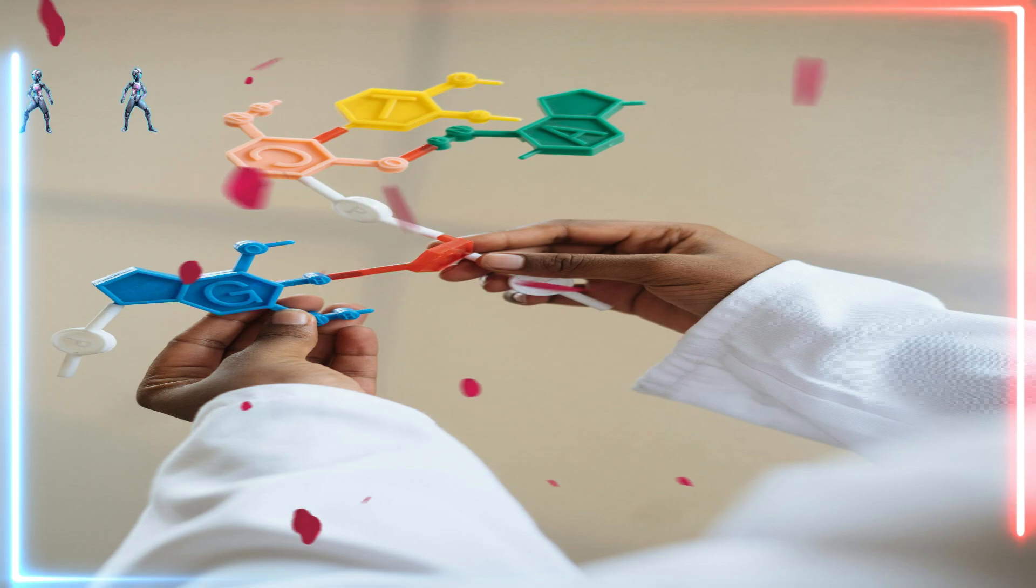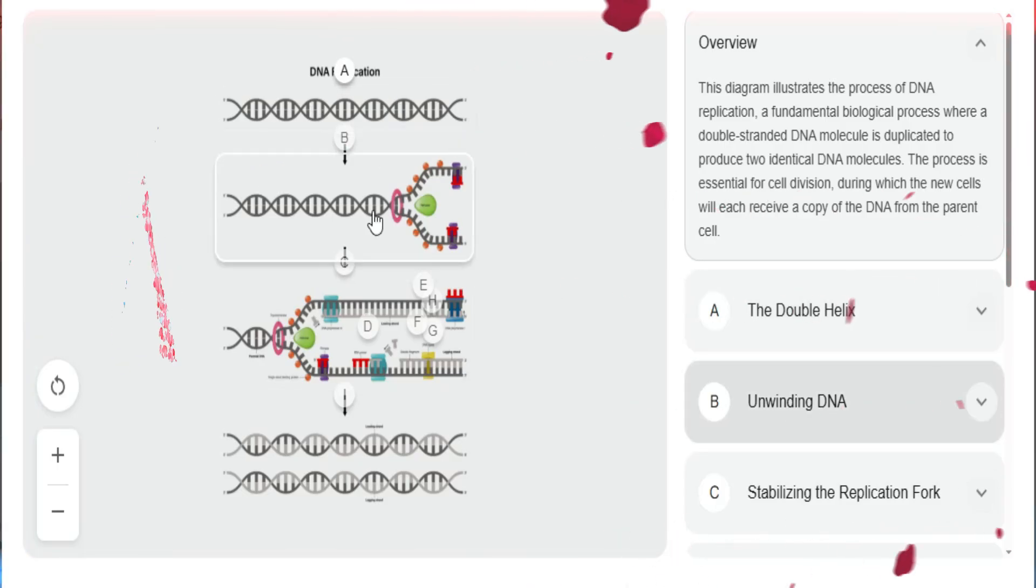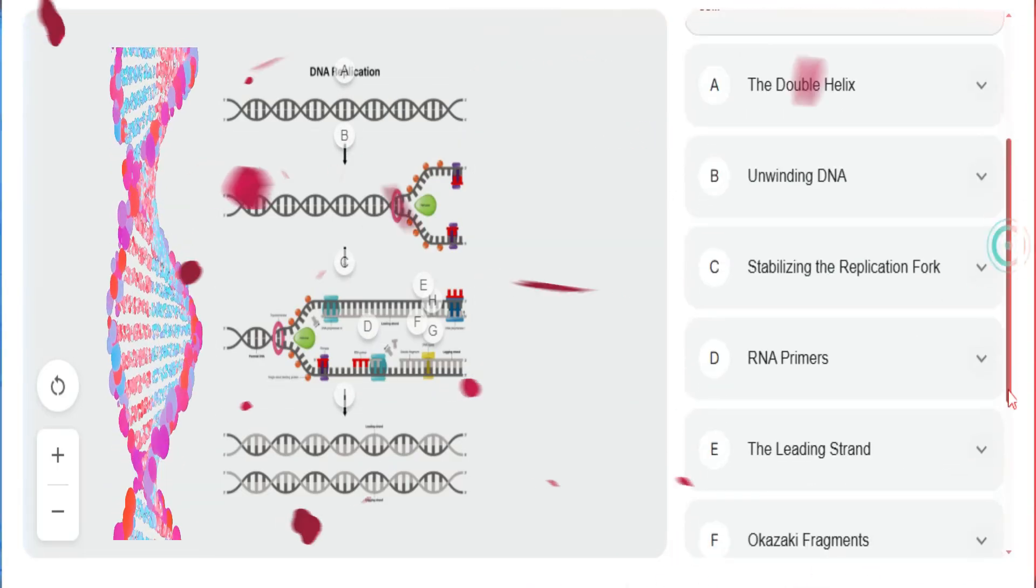An important property of DNA is that it can replicate, or make copies of itself. This is critical when cells divide because each new cell needs to have an exact copy of the DNA present in the old cell.